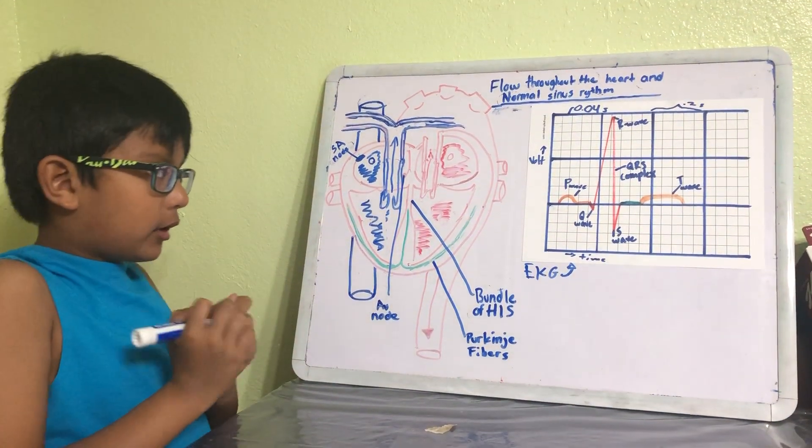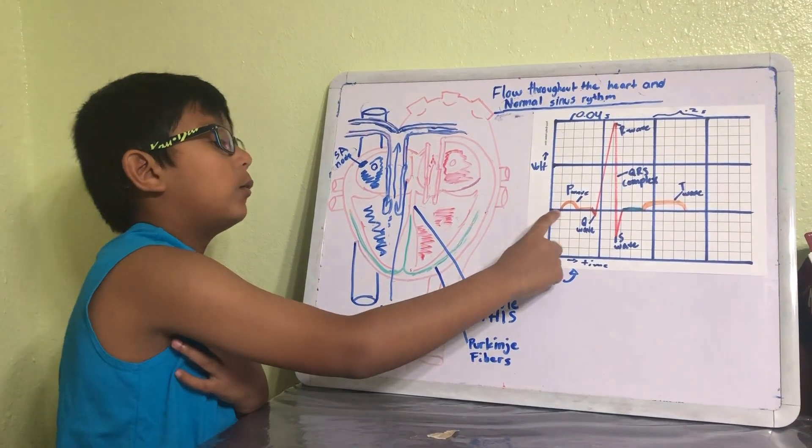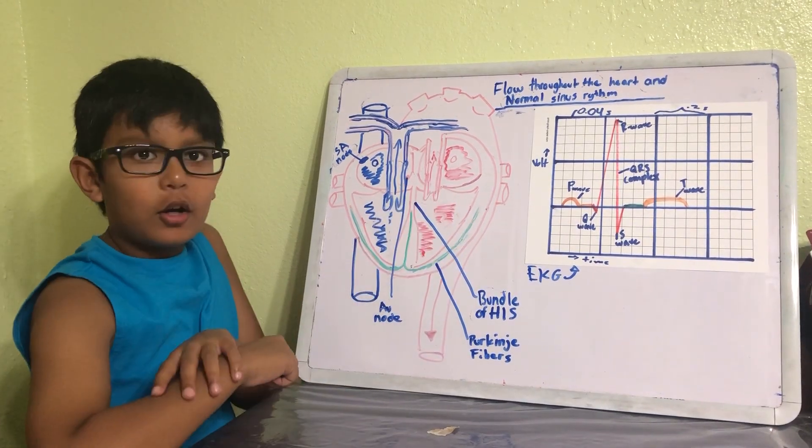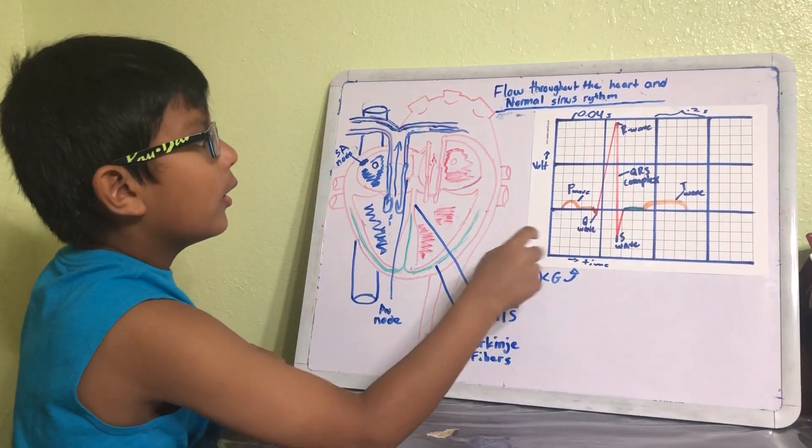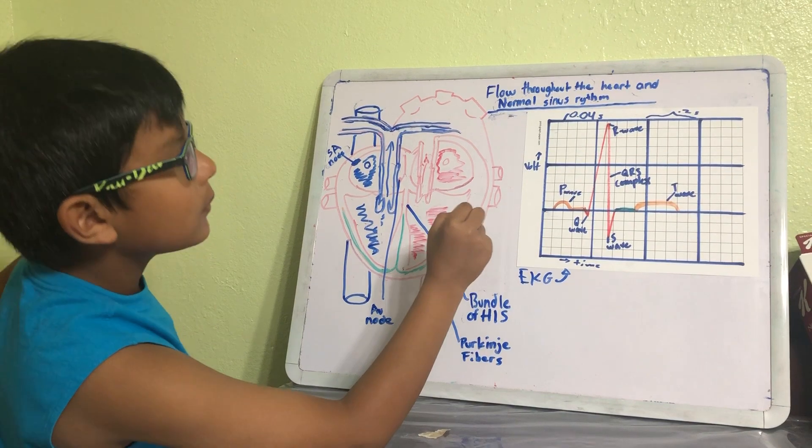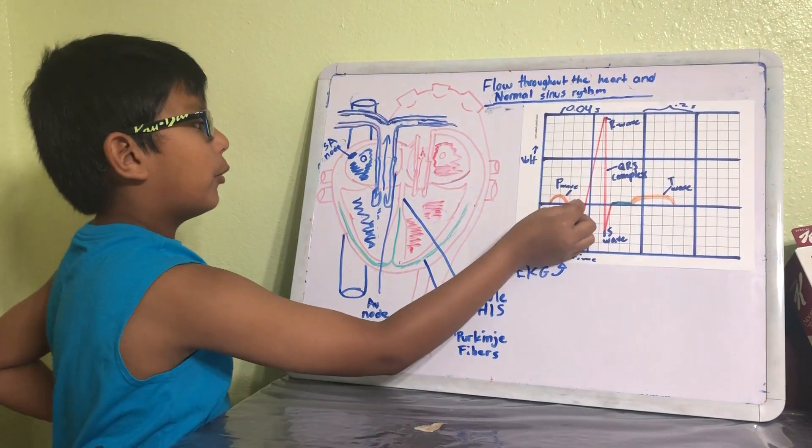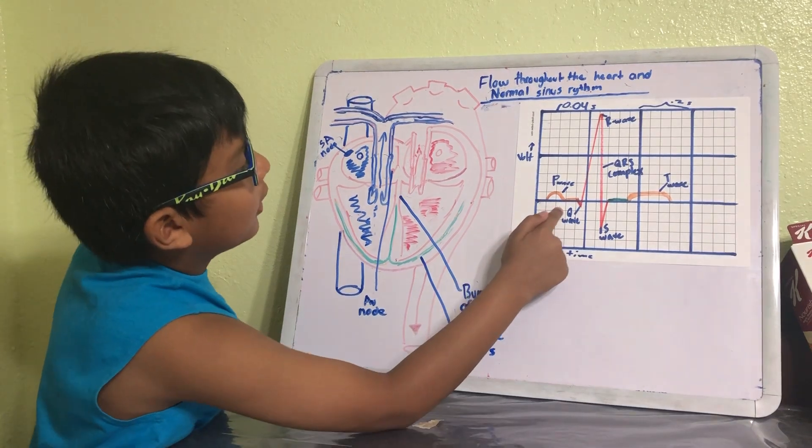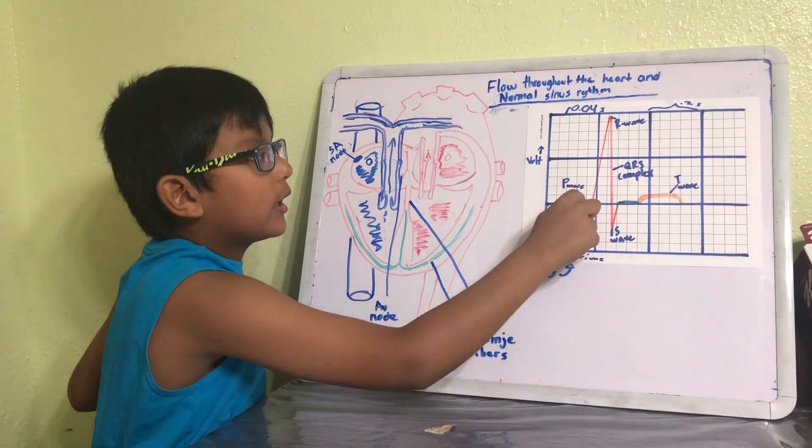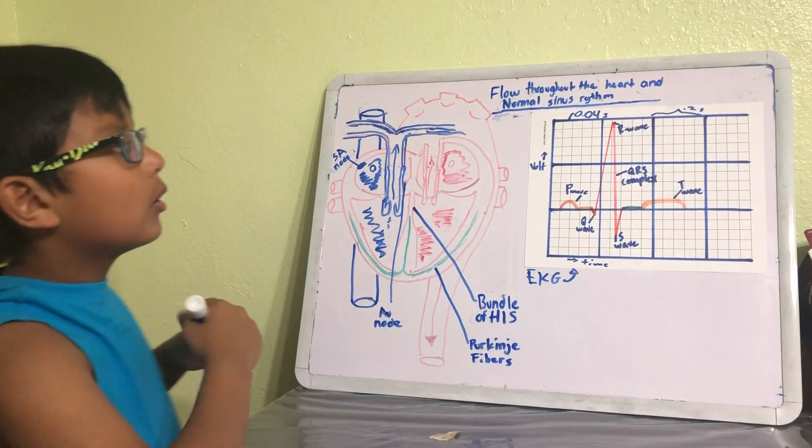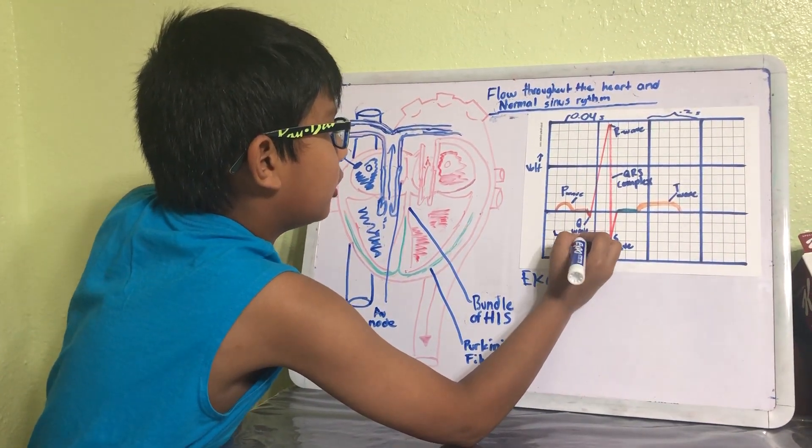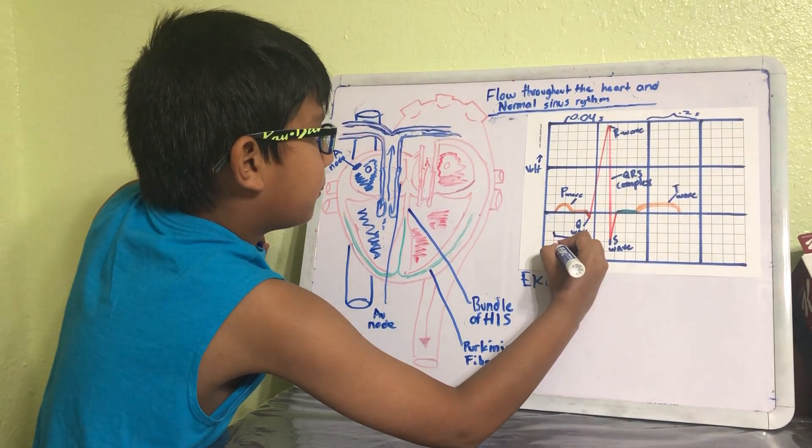Okay, now that we got that covered, when we look onto an EKG, the first wave that we will see is called the P wave. Then it lasts for 0.08 seconds, and then there's a 0.02 second delay. Then we get to the Q wave.